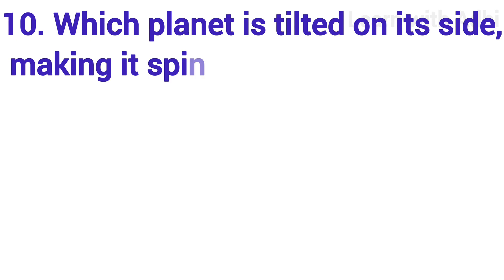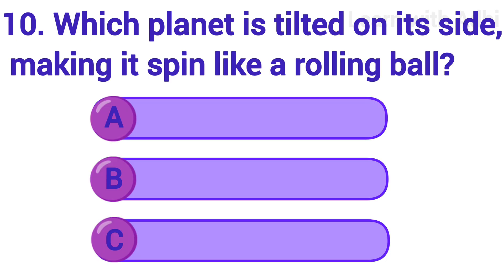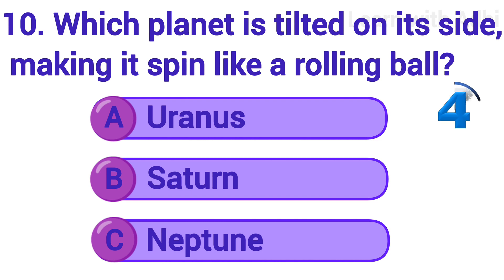Which planet is tilted on its side, making it spin like a rolling ball? Uranus.